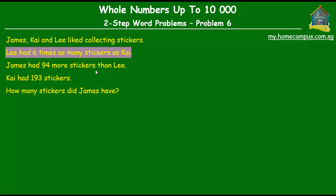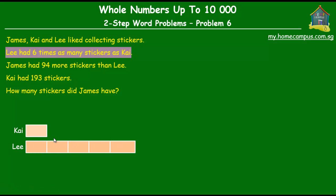So Lee had six times as many stickers as Kai. So if this little unit over here gives you the number of stickers that Kai had, then Lee had six times as many. So we put six little blocks over here and each of these blocks is equal to this block over here.